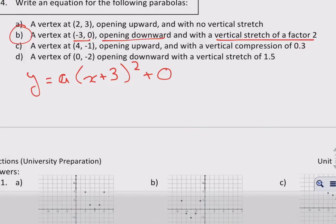Only thing I have to do now is take into consideration the fact that it opens down, as well as the factor of 2 stretch. So that's my a value. So that's going to tell me that a equals negative 2, because it's a stretch, so it's 2, opens down, therefore it's negative.